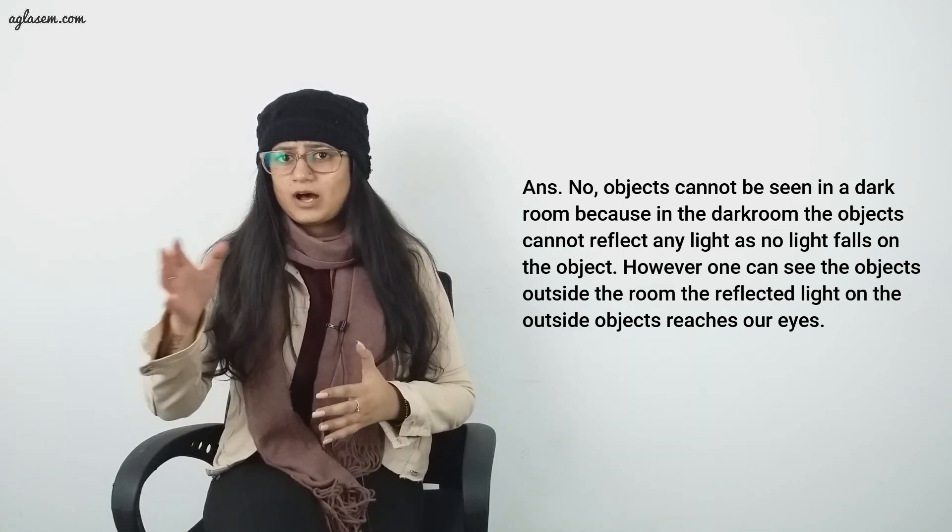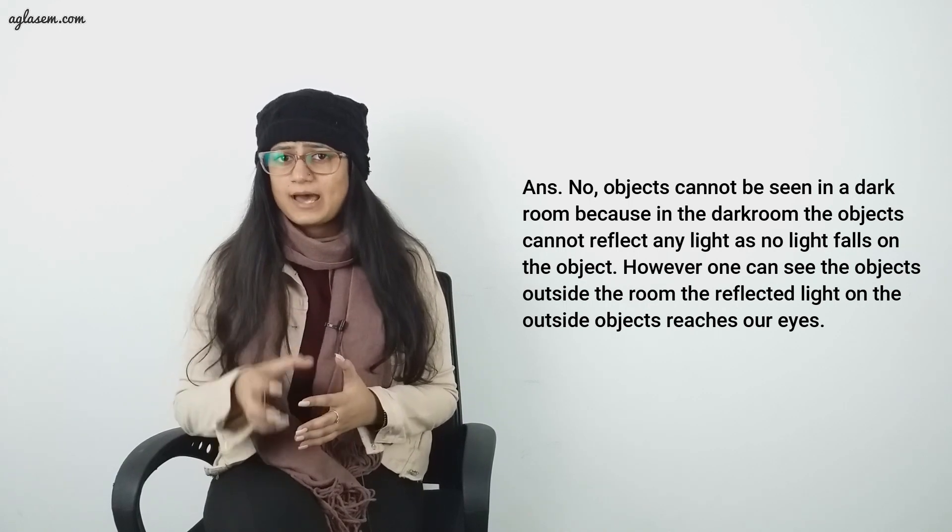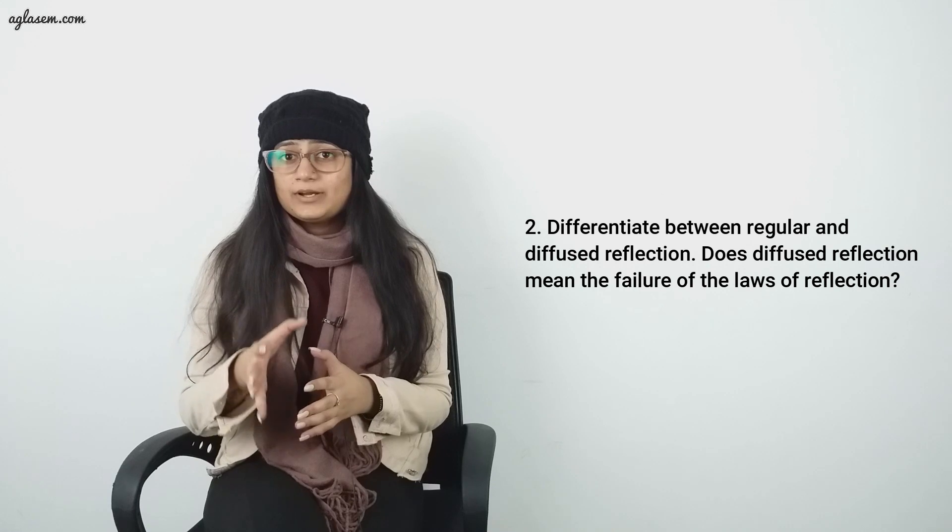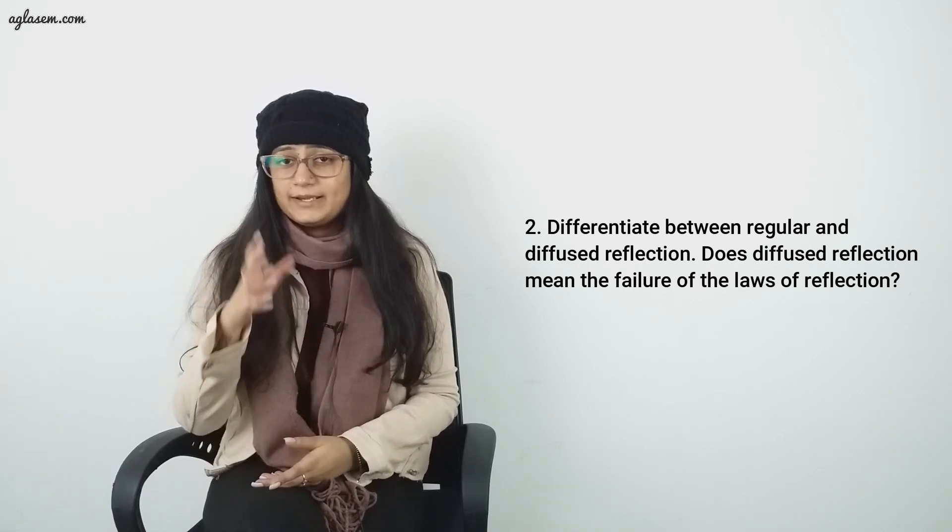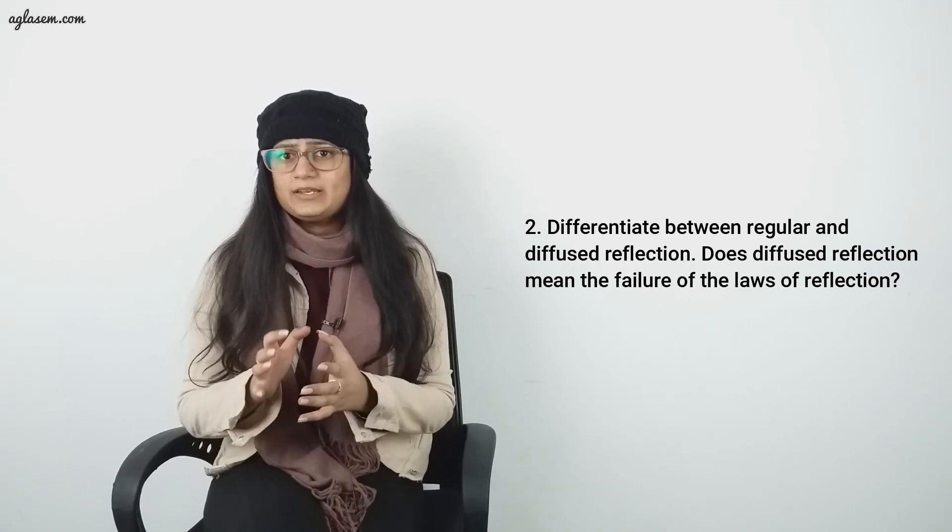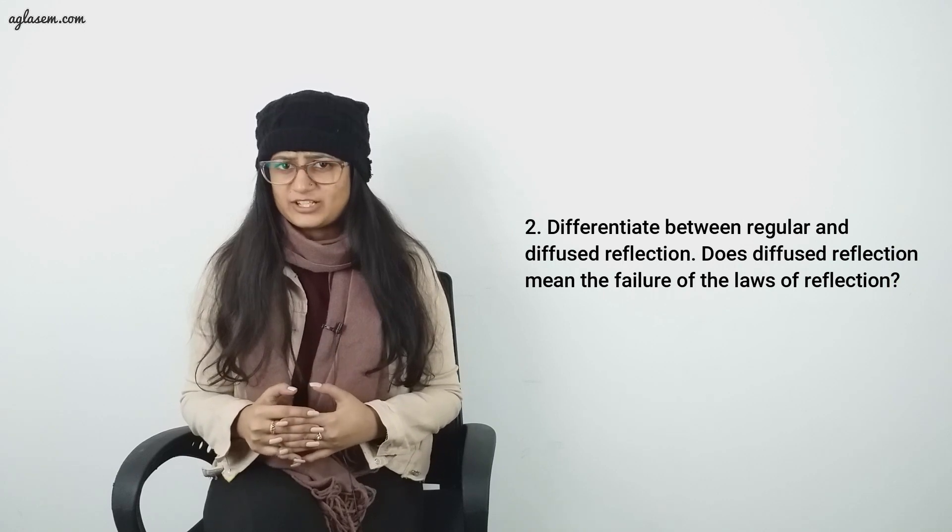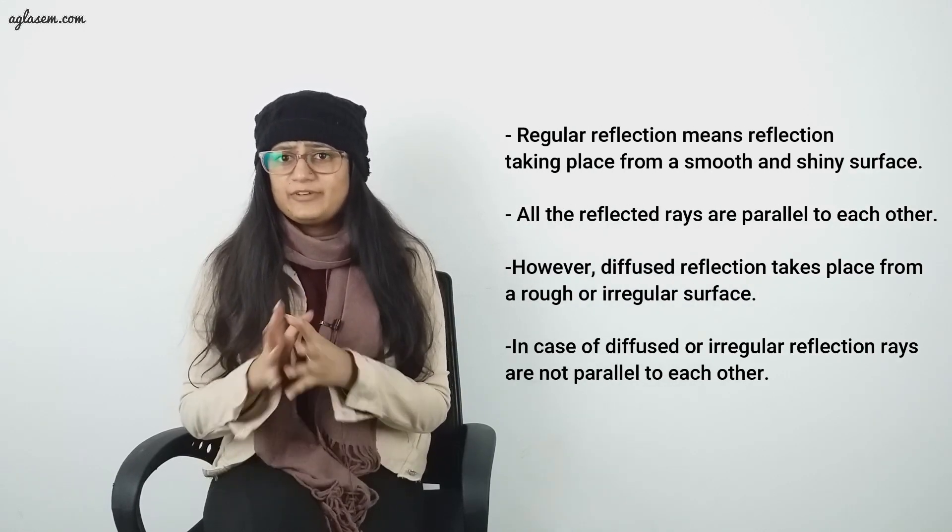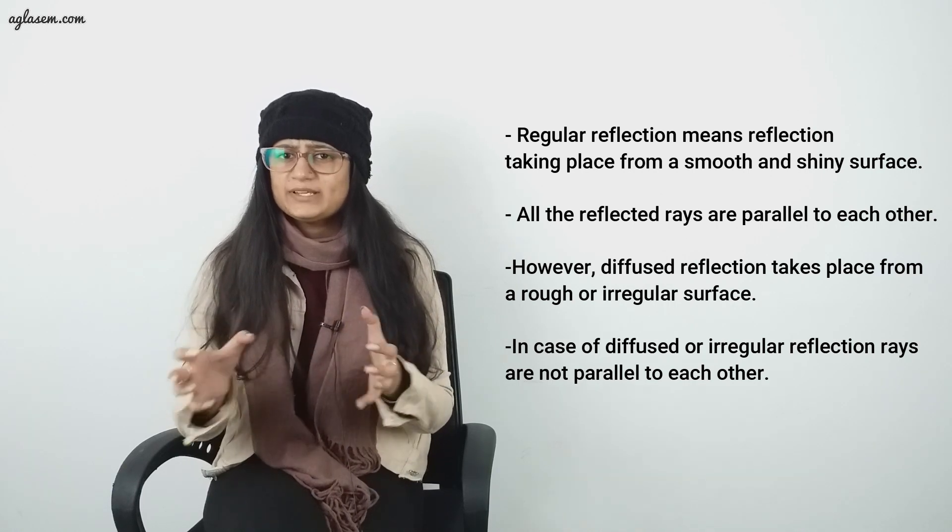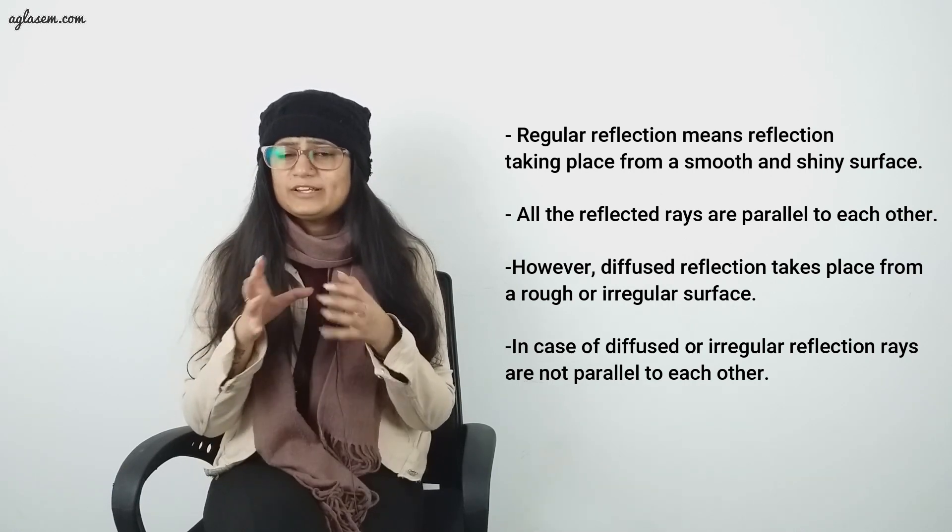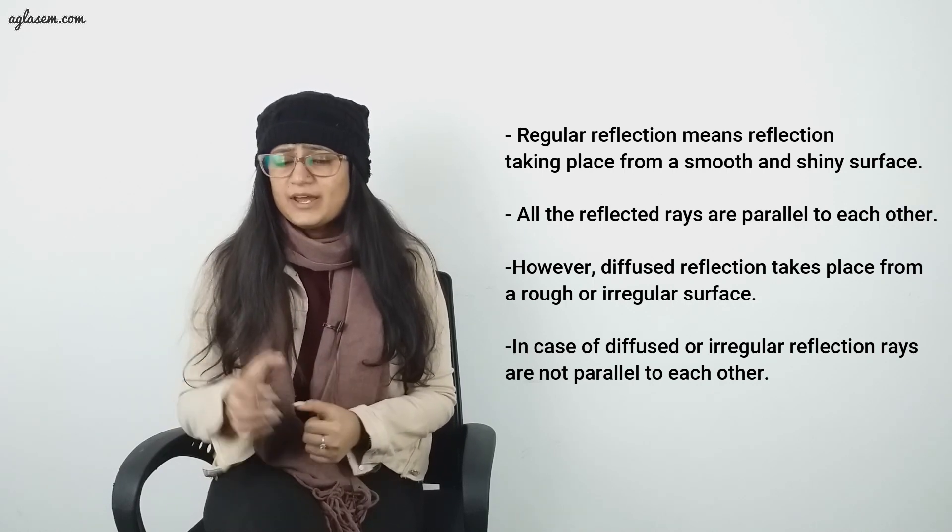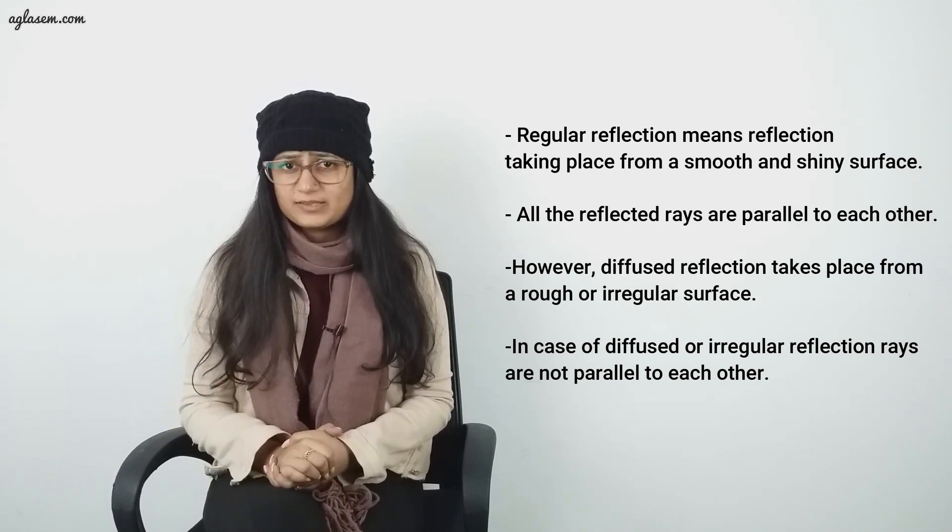Question number 2: Differentiate between regular and diffuse reflection. Does diffuse reflection mean the failure of the laws of reflection? Answer: Regular reflection means reflection taking place from a smooth and shiny surface. All the reflected rays are parallel to each other. However, diffused reflection takes place from a rough or irregular surface. In case of diffused or irregular reflection, rays are not parallel to each other.